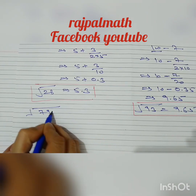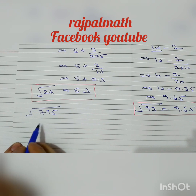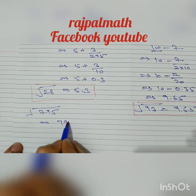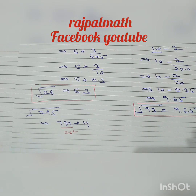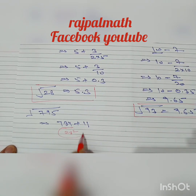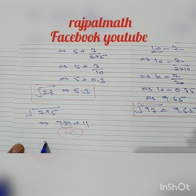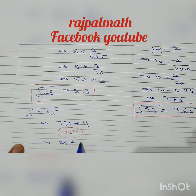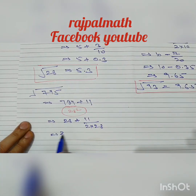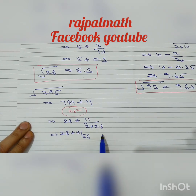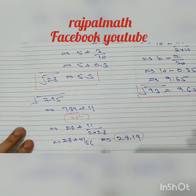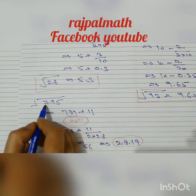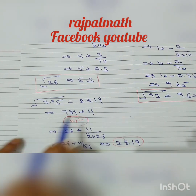795 can be written as 784 plus 11. Since 28 squared is 784, 784 is a perfect square. Applying the formula: 28 plus 11 over (2 times 28), which implies 28 plus 11 over 56, approximately equals to 28.19. Therefore, under root of 795 is 28.19.